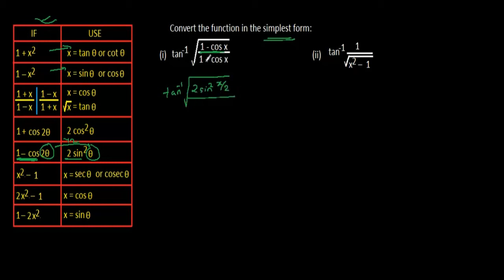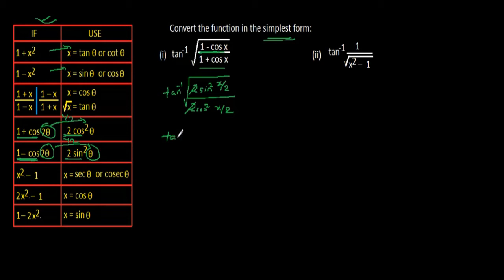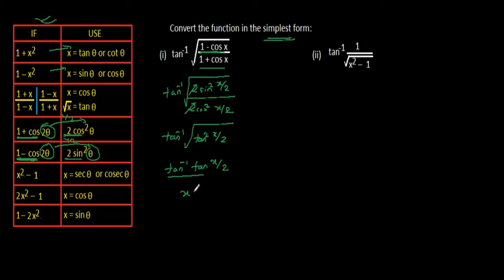Whole divided by 1 plus cos. Here 1 plus cos is given, and 1 plus cos will be converted into 2 cos square. So 1 plus cos will be written as 2 cos square, with the angle x by 2. Now this 2 and 2 will be cancelled out, left with tan inverse square root of sin square by cos square, which is tan square x by 2. Now this square root and square will be cancelled out, left with tan inverse tan x by 2.